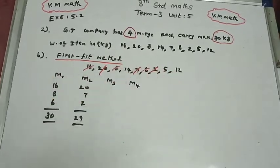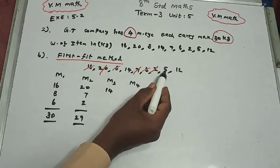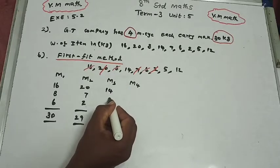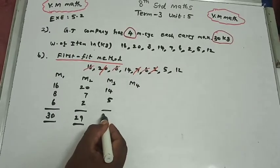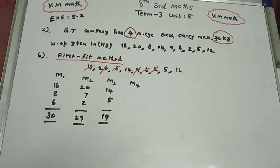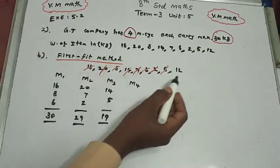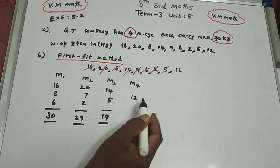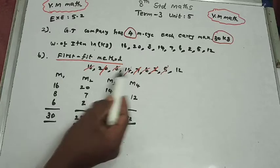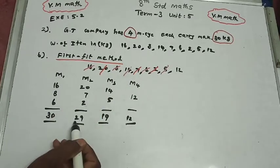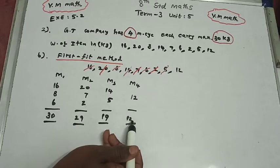For the third motorcycle: start with 14 kg. Add 5: that gives 19 kg, which is less than 30. Try adding 12: 19 + 12 = 31, which exceeds 30, so cancel. Item 12 goes to the fourth motorcycle. Summary: Motorcycle 1 carries 30 kg, Motorcycle 2 carries 27 kg, Motorcycle 3 carries 19 kg, Motorcycle 4 carries 12 kg.